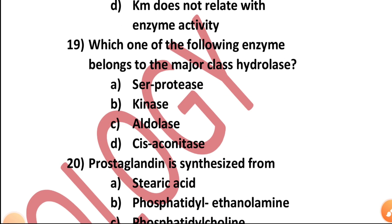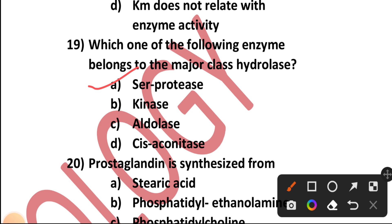Question number nineteen: Which of the following enzymes belongs to the major class hydrolase — serine protease, kinase, aldolase, or cis-aconitase? The answer is serine protease. Option A.